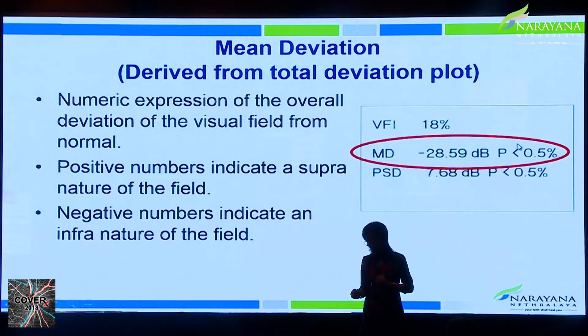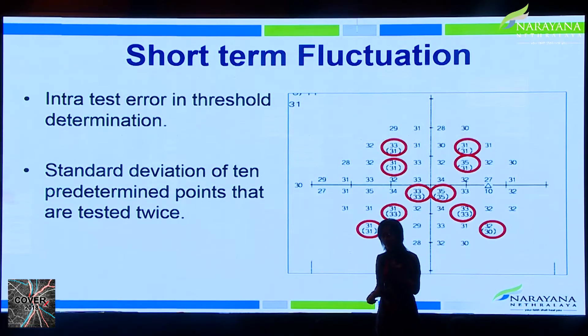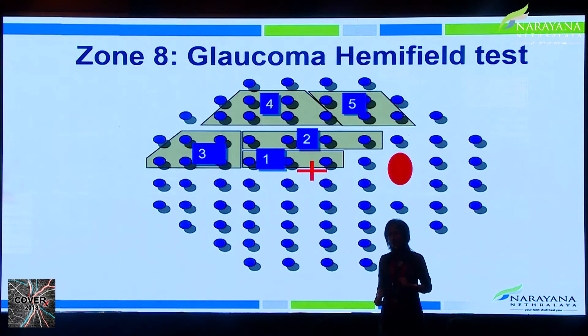Mean deviation gives an overall picture of the total deviation plot — the numerical expression of overall deviation from normal. The p-value shows how abnormal it is compared to normal; positive numbers indicate supra-threshold, negative numbers indicate infra-threshold field. Pattern standard deviation is also derived from the total deviation plot but indicates the irregularity or localized scotoma in a given field — like potholes. Short-term fluctuation was used for full-threshold programs; corrected pattern standard deviation adjusts for it, but is not available for SITA programs.